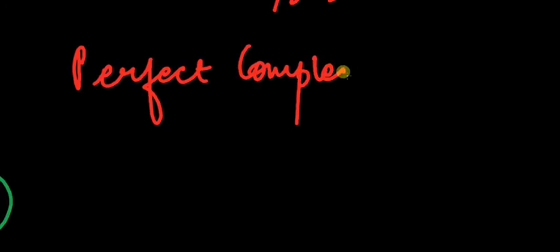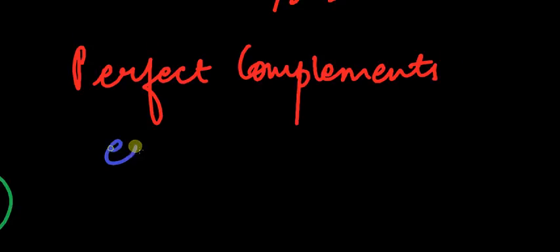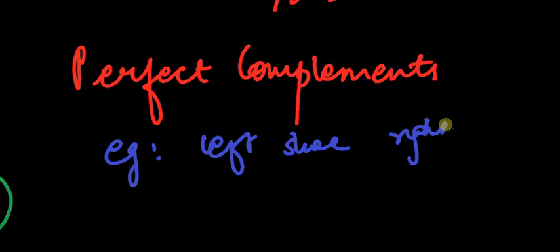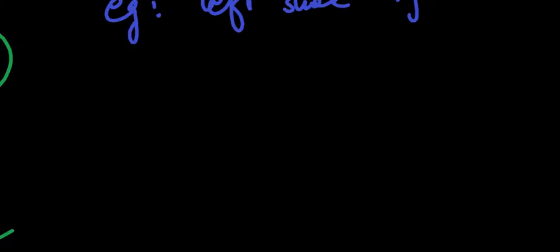Now let's go to perfect complementary goods. Perfect complementary goods are goods that are used together — like a left shoe and right shoe pair, or bread and butter, or tea and sugar. They are always used together.